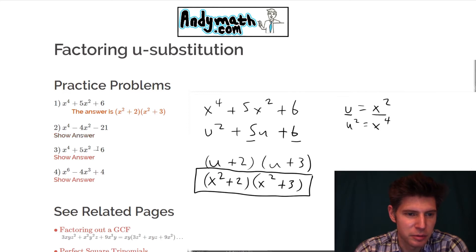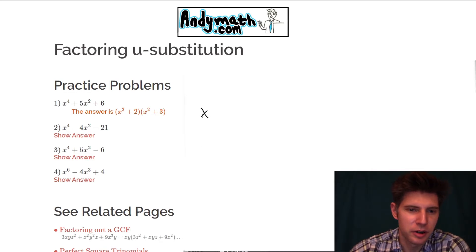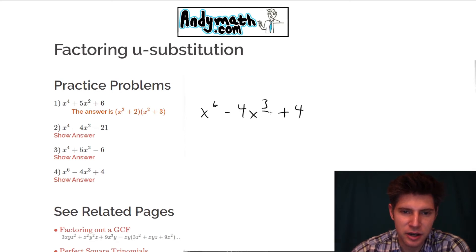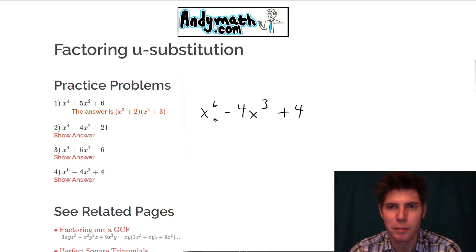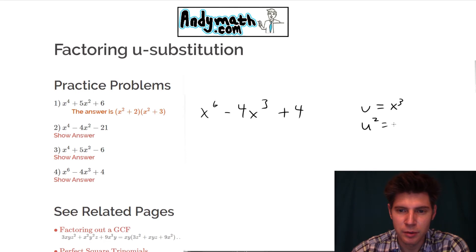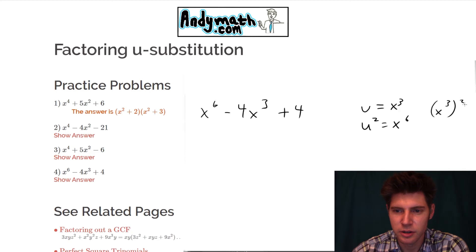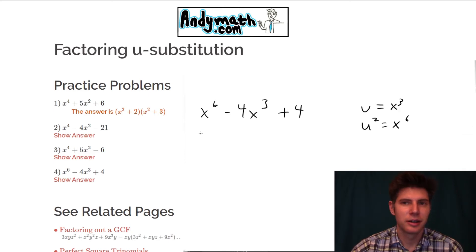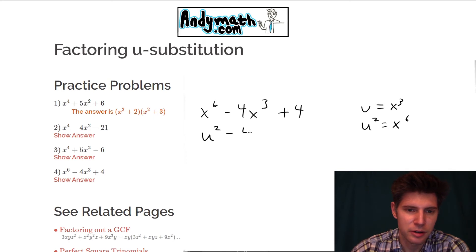Now, these two are going to be handled the same way — just plug in u equals x squared. So next we'll do number 4. It looks a little different because of the x to the sixth. But any time that this exponent is half of this exponent, you can use this u-substitution method. So the way we'll do this is u equals x cubed. Same idea — if we square the u and we square this side, we get x to the sixth, because x cubed squared is x to the sixth. The x to the sixth changes into a u squared, and the x cubed changes into a u.